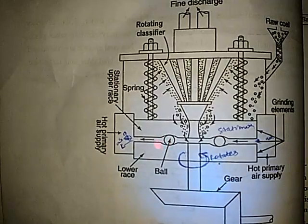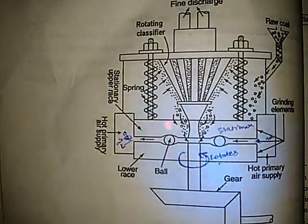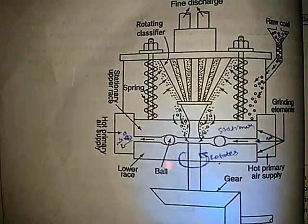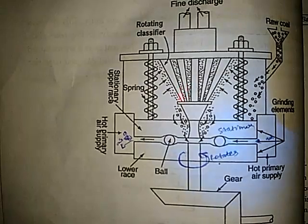The coal is crushed in this portion. After the crushing of the coal, the powdered coal is taken to the rotating classifier. This rotating classifier works on the principle of centrifugal force where the larger coal particles are separated at its ends due to their larger mass.